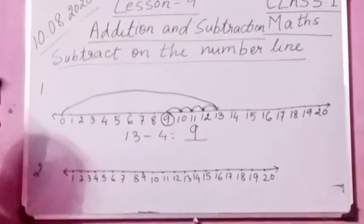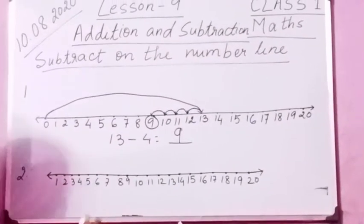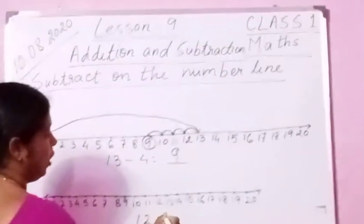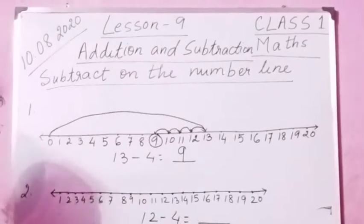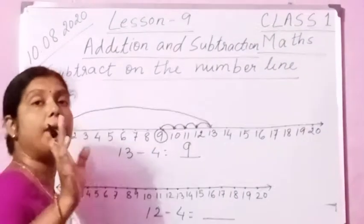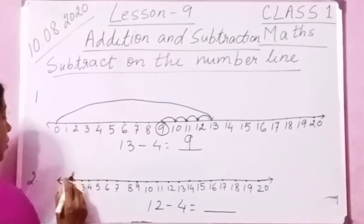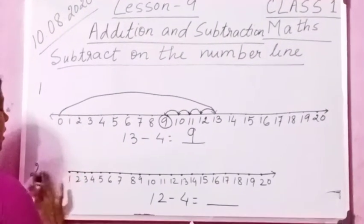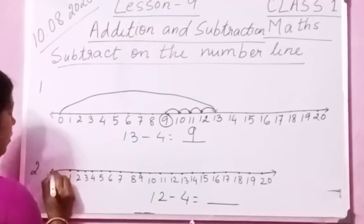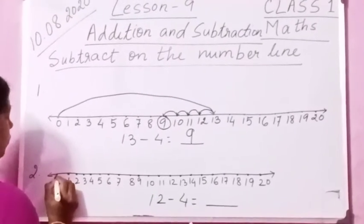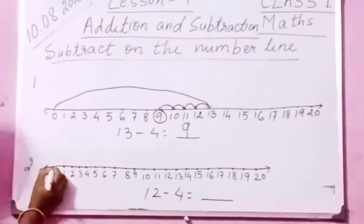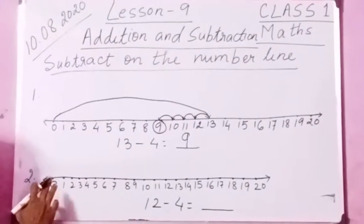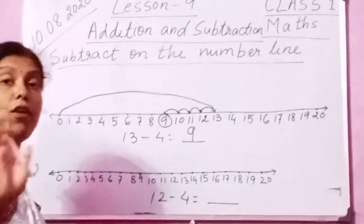Now you see number 2. Number 2 is 12 minus 4. We have to do 12 minus 4. How much is it? Let us do it the same way. Draw a number line up to 20. Always keep in mind that from 0 we are going to start the number line. From 0.